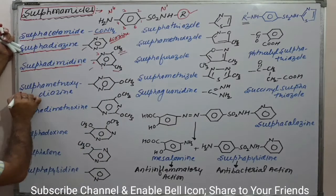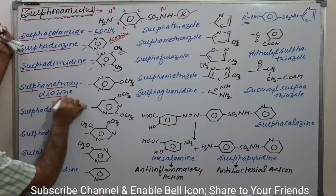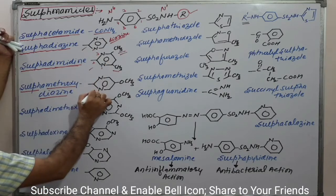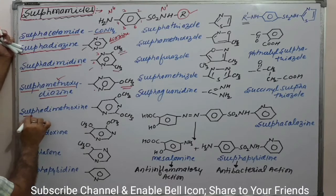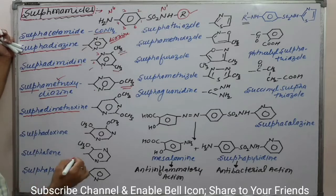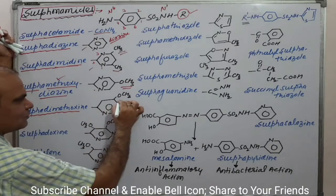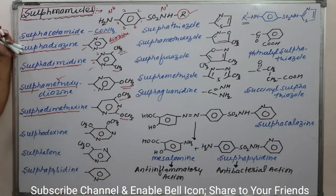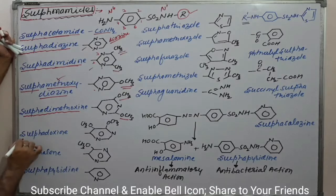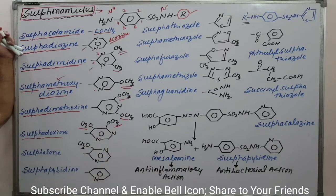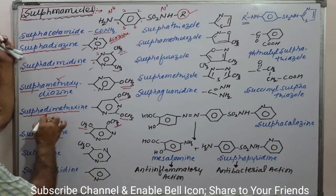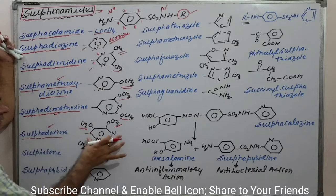Next is sulphamethoxidiazine — very simple, as it contains a methoxy group on the diazine ring. Then sulphadimethoxine, which contains 2 methoxy groups. Next is sulphadoxine, which also contains methoxy groups, but the position of the methoxy groups differs from sulphadimethoxine.